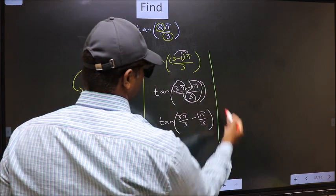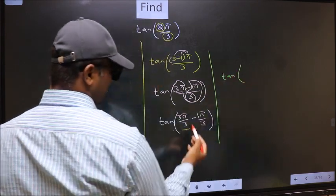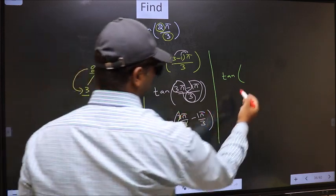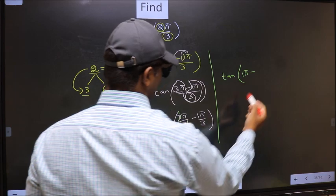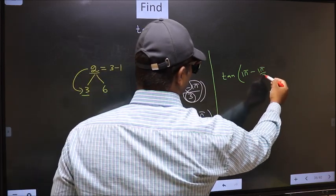Next. Tan. Over here, you should cancel 3. We get 1π minus this no change, 1π/3.